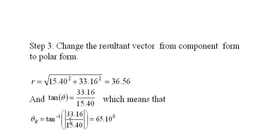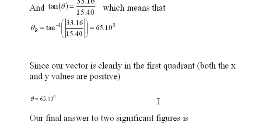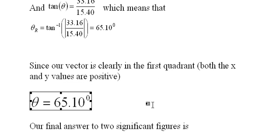Which is 65.1 degrees. Since our vector is clearly in the first quadrant—both x and y values are positive—it could be no other place. Then our theta is 65.1 degrees.